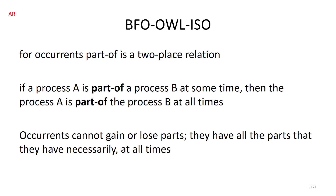We solve this problem first by recognizing that 'part of' is a two-place relation for occurrents. So there is no time problem when it comes to expressing part-of relations between occurrents. My youth is a part of my life; my old age is a part of my life. And that's true atemporally — it will always have been the case that my youth was a part of my life.